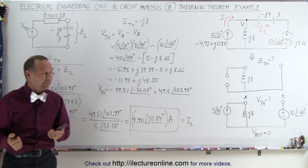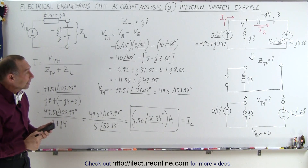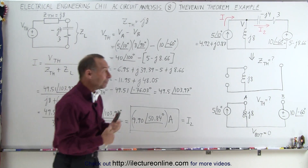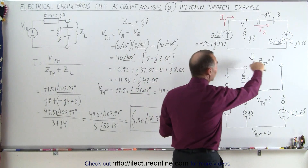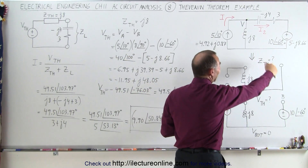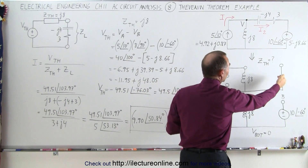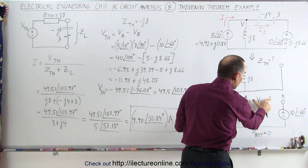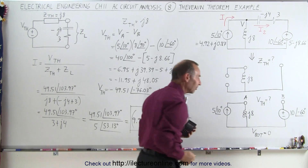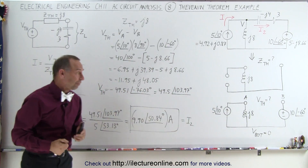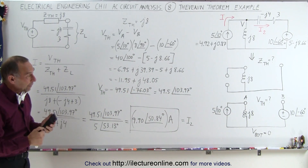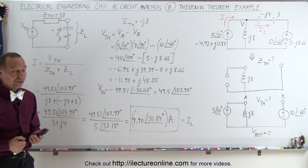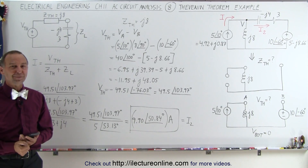I like the Thevenin theorem — I think it's very straightforward. Sometimes with very complicated problems, it makes things a lot easier because it's easy to find the Thevenin impedance by getting rid of the sources. Then removing the load resistance simplifies the circuit and makes it quite easy to find the voltage across the terminals. So this is another good technique to solve a circuit like this.